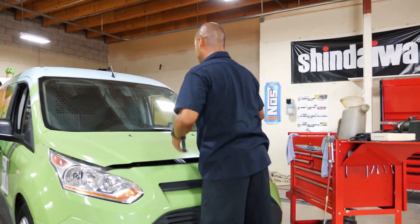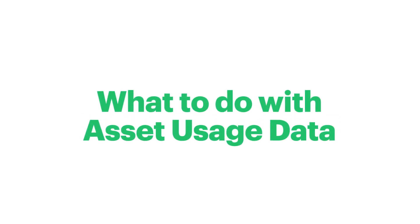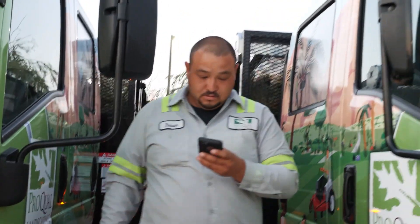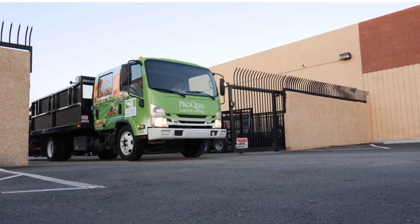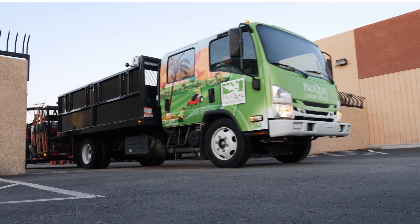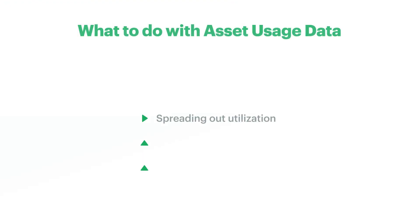So now that we've talked about where to find it, what do you do with asset usage data? Tracking this data helps you quickly discern if assets are being over or underutilized so that you can address that issue with a variety of solutions, like spreading out utilization across different assets, right-sizing your fleet by either selling off underused vehicles or purchasing new ones, optimizing your routes, and a lot more.